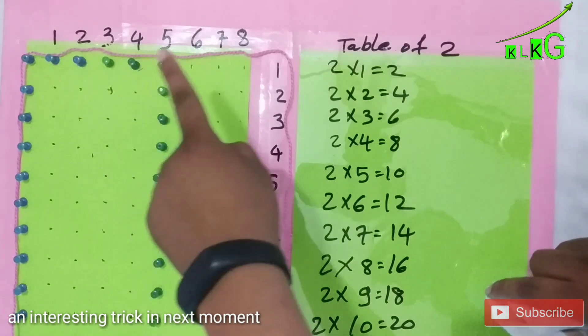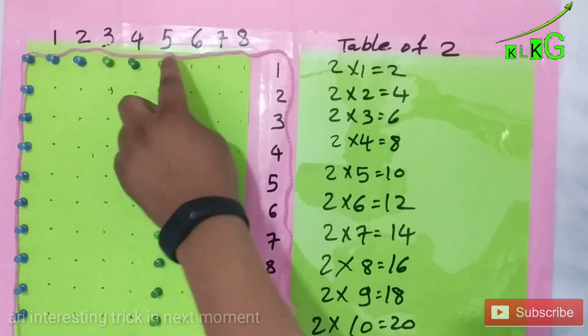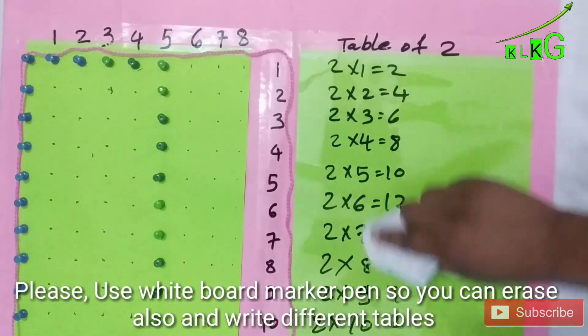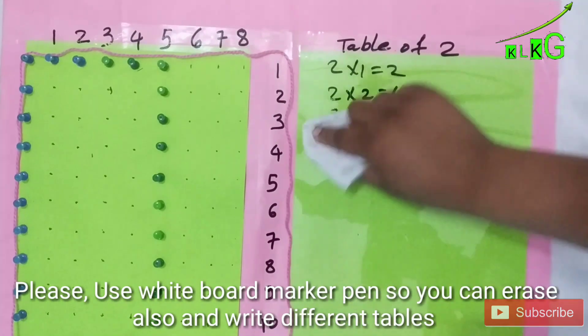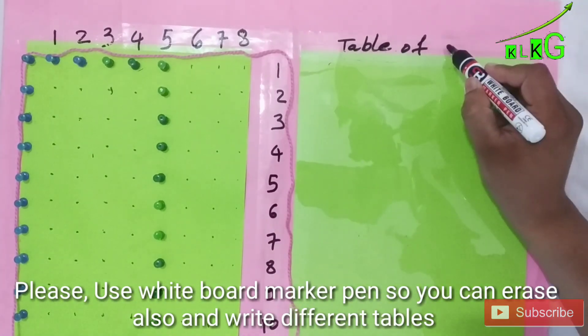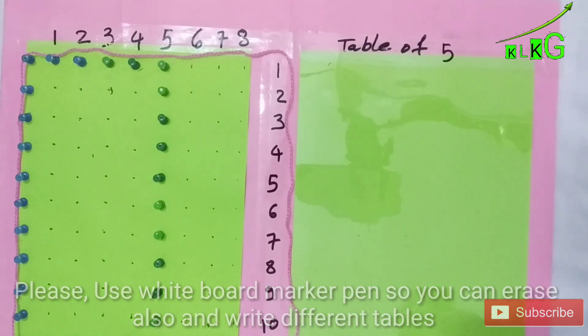So not only table of two. Now let me show you table of five, friends. If we use marker pen we can erase it easily and use it multiple times. So now table of five, I'm just going to show you how to arrange woolen thread.